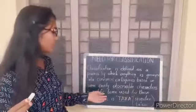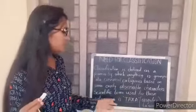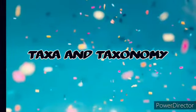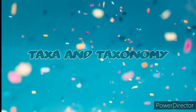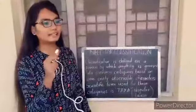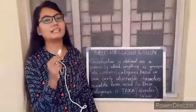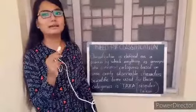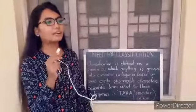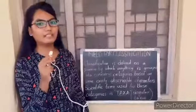The scientific name used for these categories is Taxa. Taxa can indicate categories at different levels. For example, Animalia, Chordata, Mammalia, etc., represent Taxa at different levels.